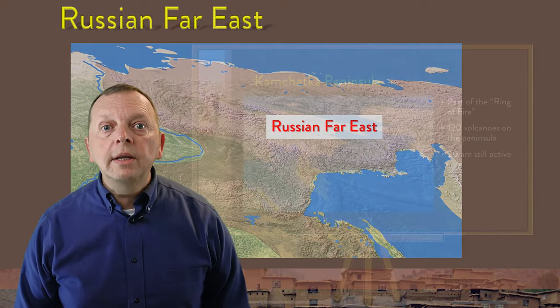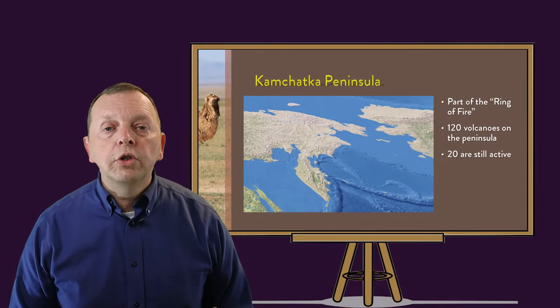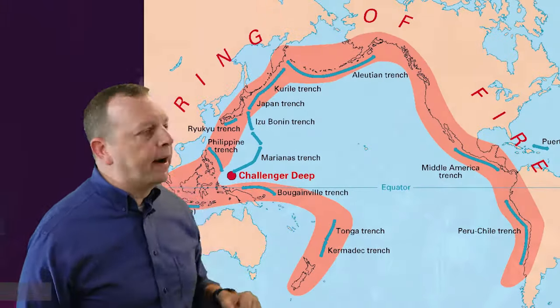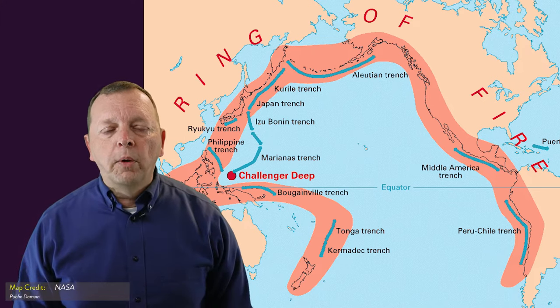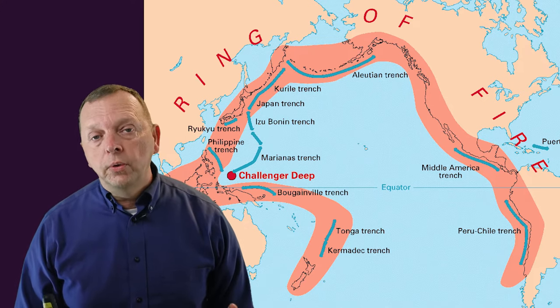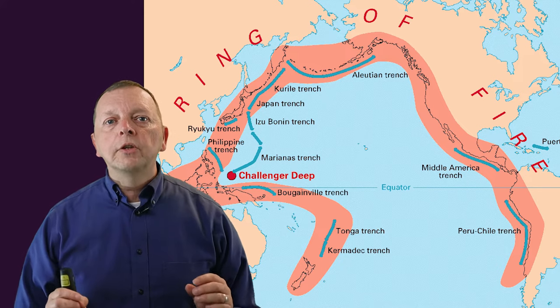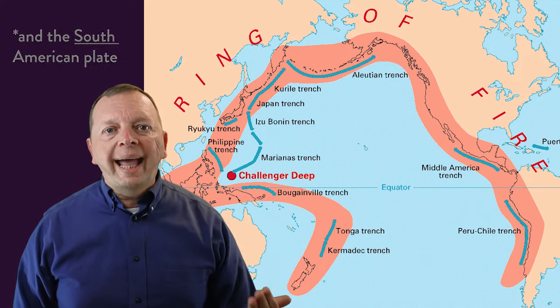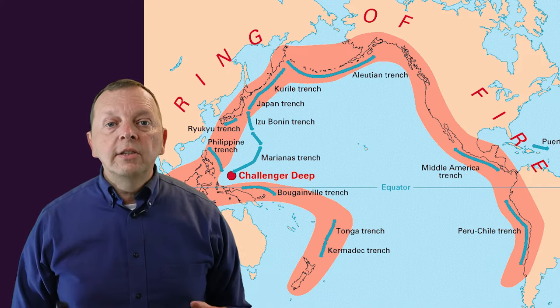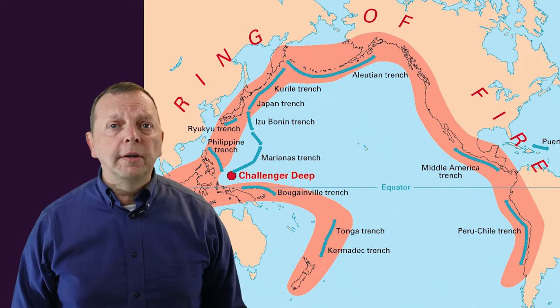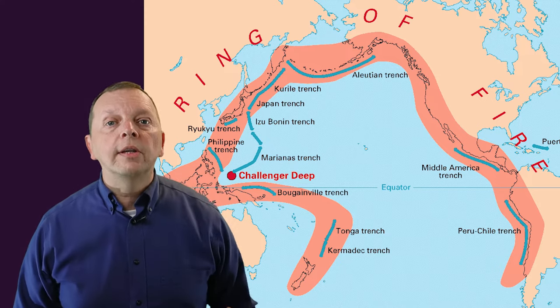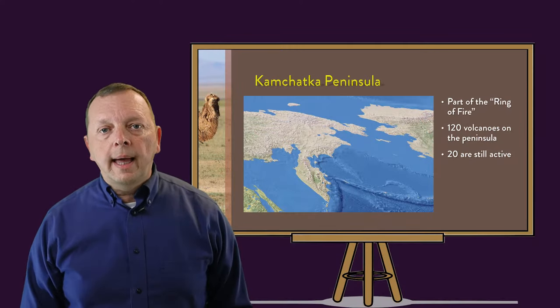One part of the Russian Far East is the Kamchatka Peninsula, which is Russia's part of the Ring of Fire — not that Ring of Fire, this Ring of Fire. As we've discussed before, the Ring of Fire is the subduction zone that encircles the Pacific Ocean and was created as the Pacific Plate collided with the North American plates as well as the Asian continental plates. Since the Ring of Fire is home to 90% of all the world's earthquakes and 75% of the world's volcanoes, there is a lot of seismic activity in the Kamchatka Peninsula.